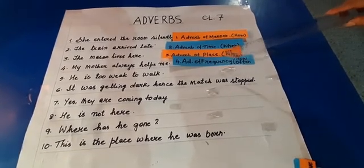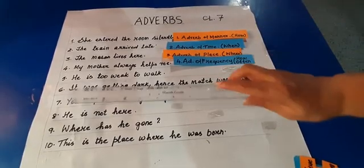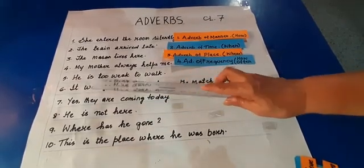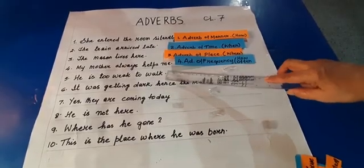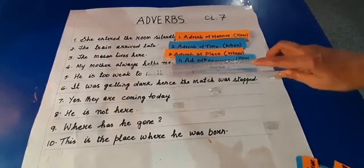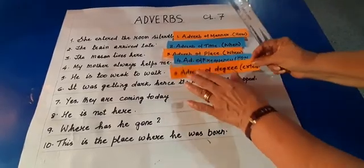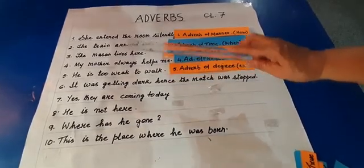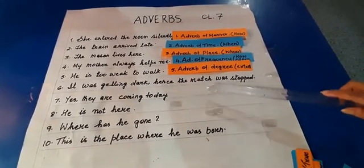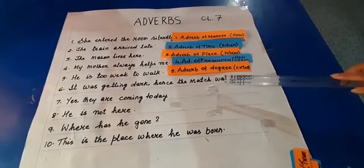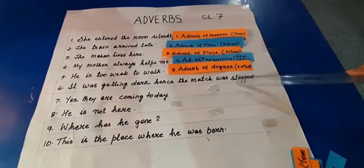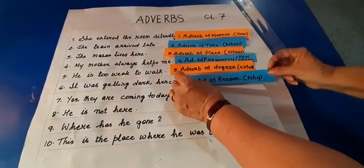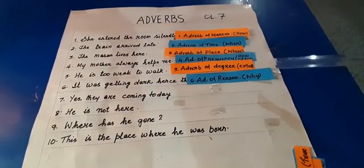In sentence five, he is too weak to walk. I asked the question 'to what extent is he weak?' and I get the answer 'too.' Therefore, 'too' tells me it's the adverb of degree — to what level or to what extent he is so weak that he cannot walk. Sentence six: it was getting dark, hence the match was stopped. This gives me the reason why the match was stopped. Therefore, this becomes your adverb of reason — asking the question 'why.'